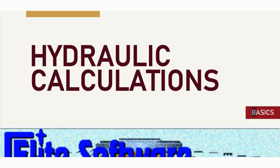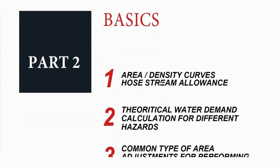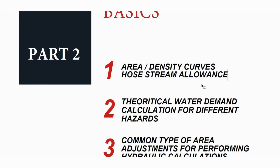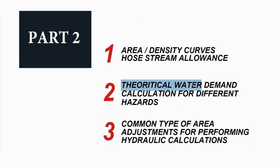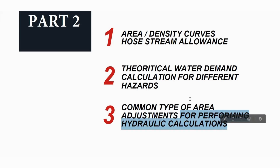In this session we are going to discuss sprinkler system basics. In part 2, we will cover area-density curves and hose stream allowance as per NFPA 13 requirements, then dive into theoretical water demand calculations for various hazard occupancies. We will also cover area adjustments based on the type of sprinkler system for performing hydraulic calculations.